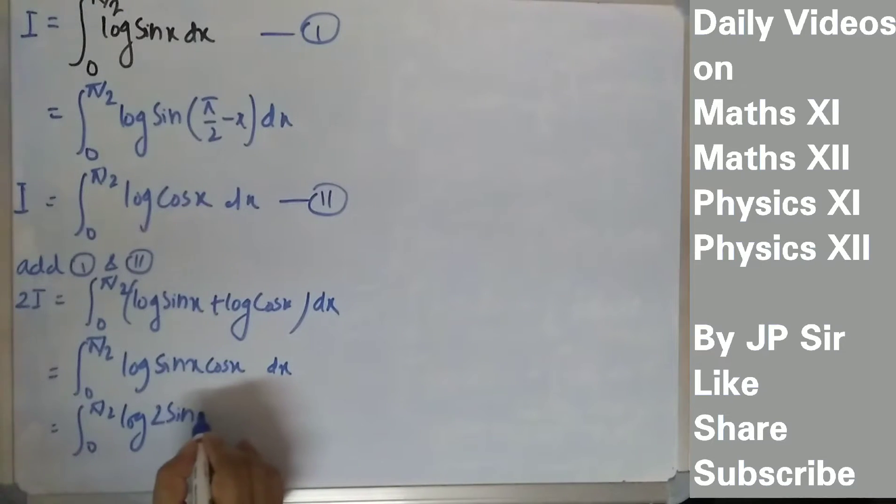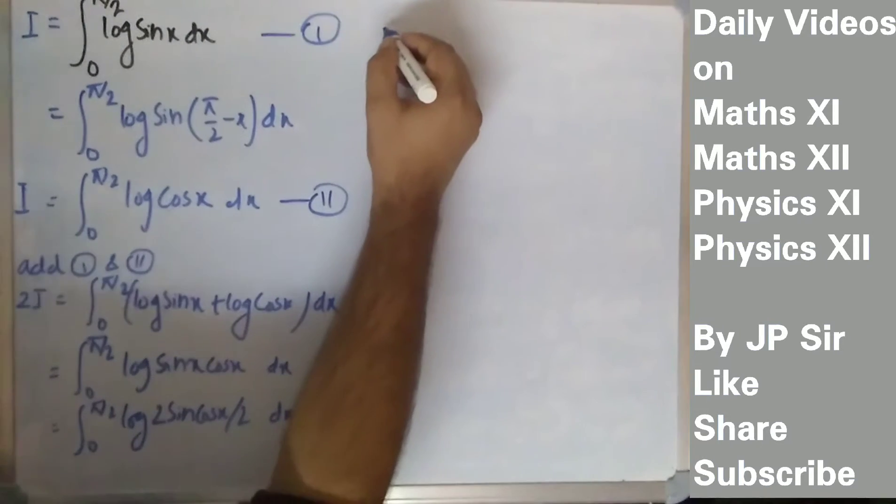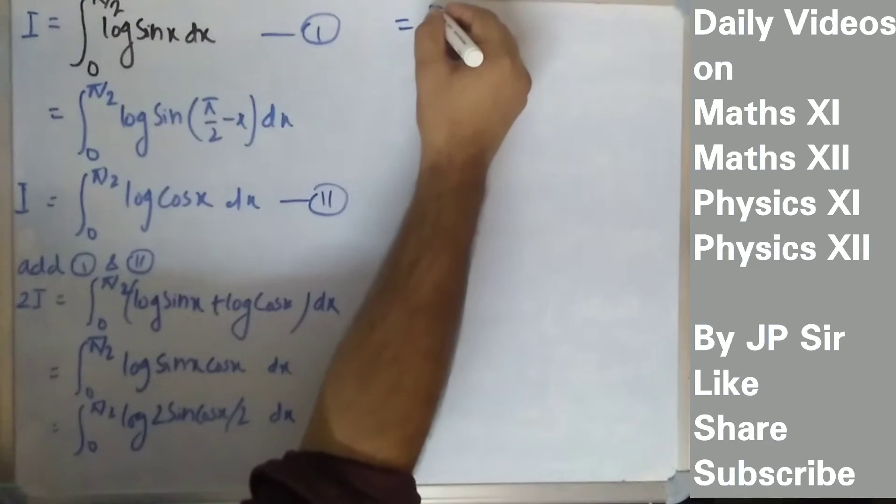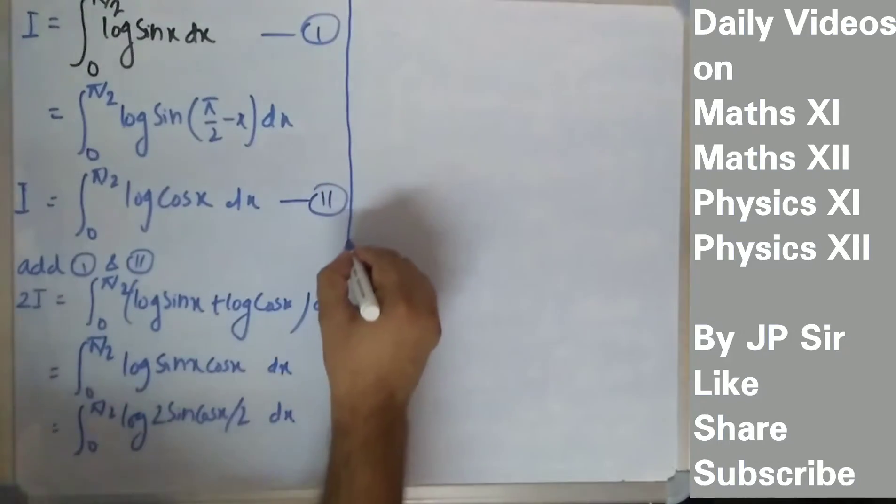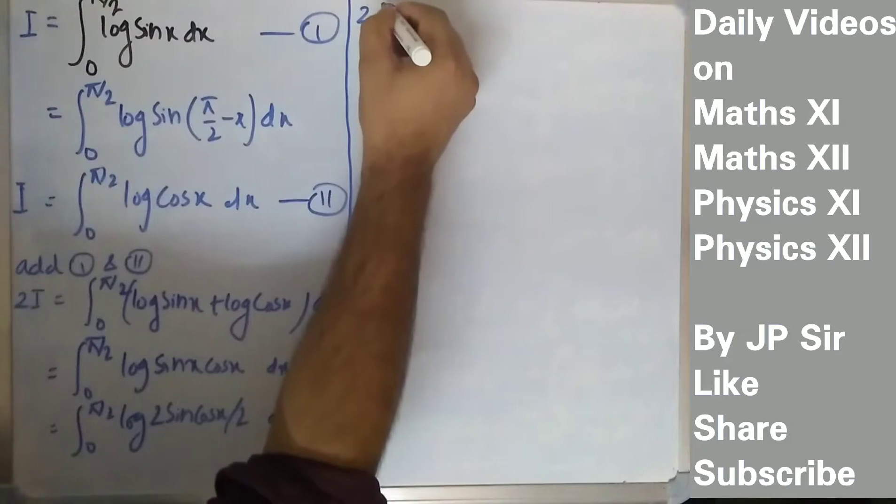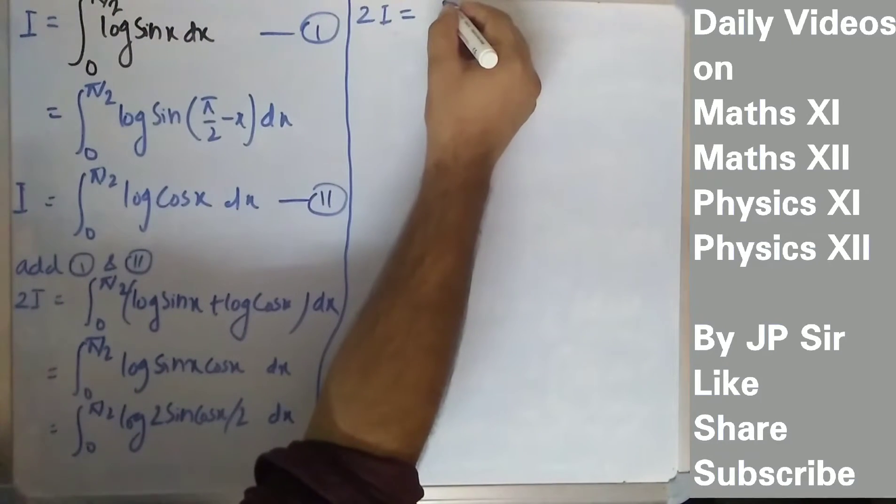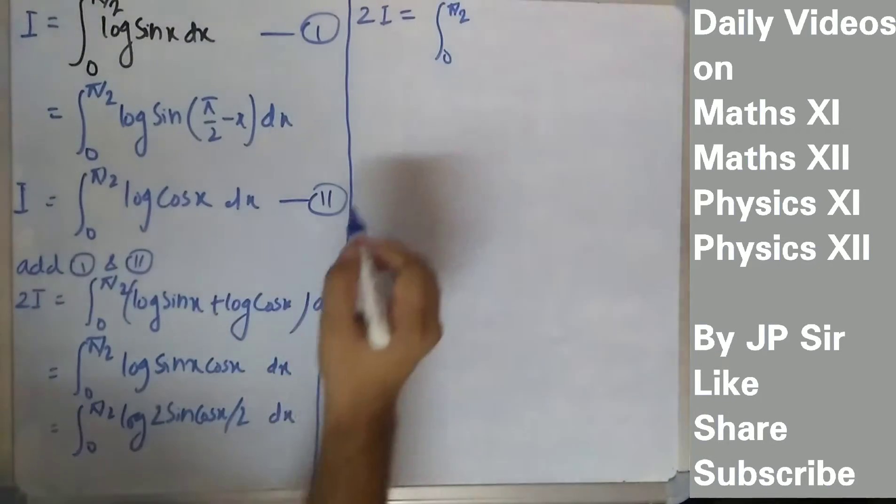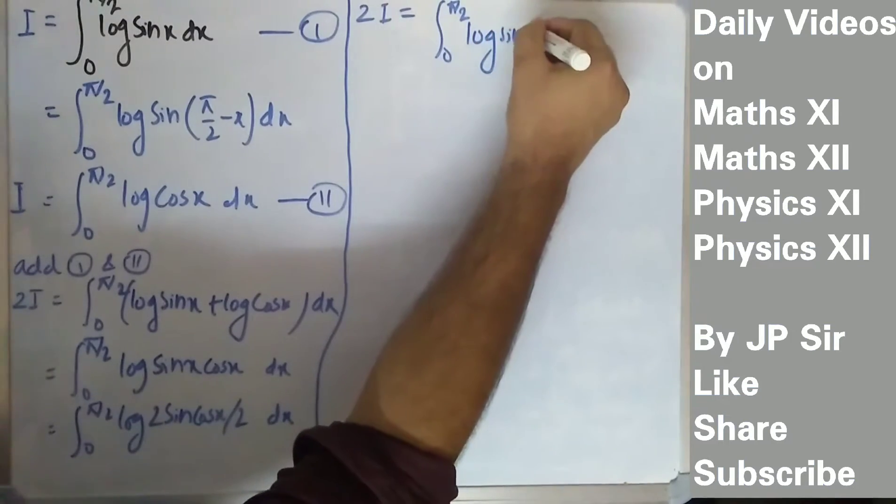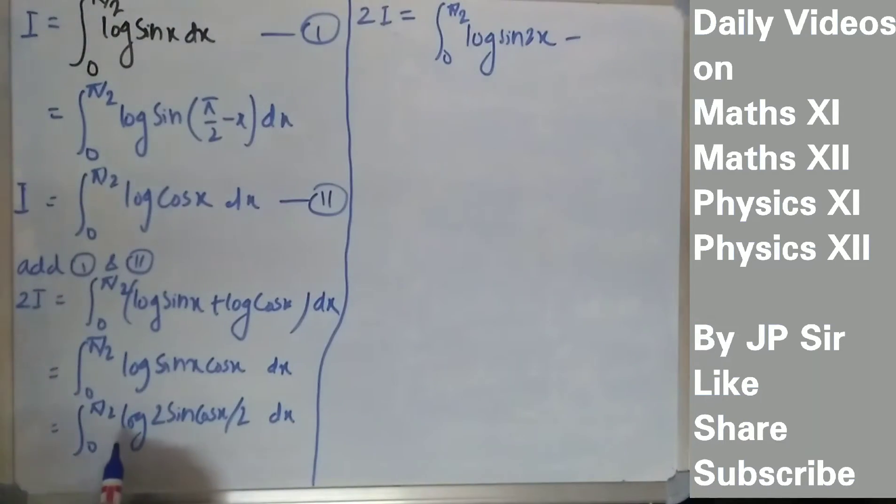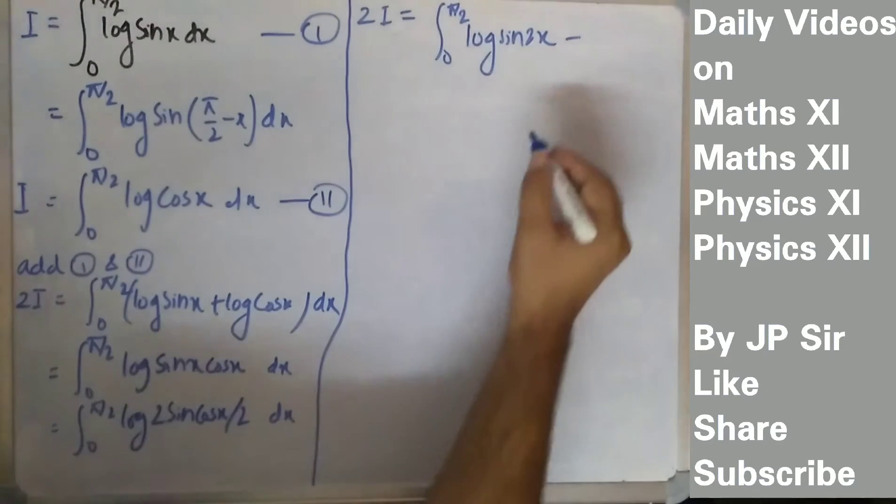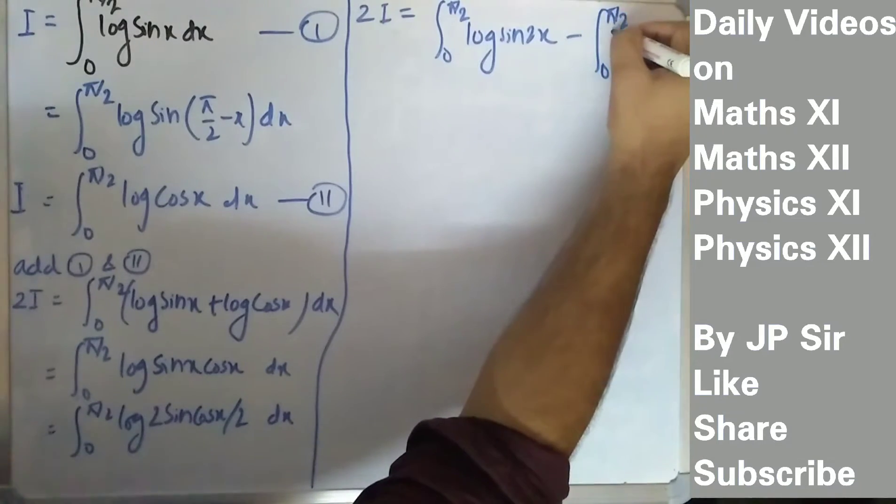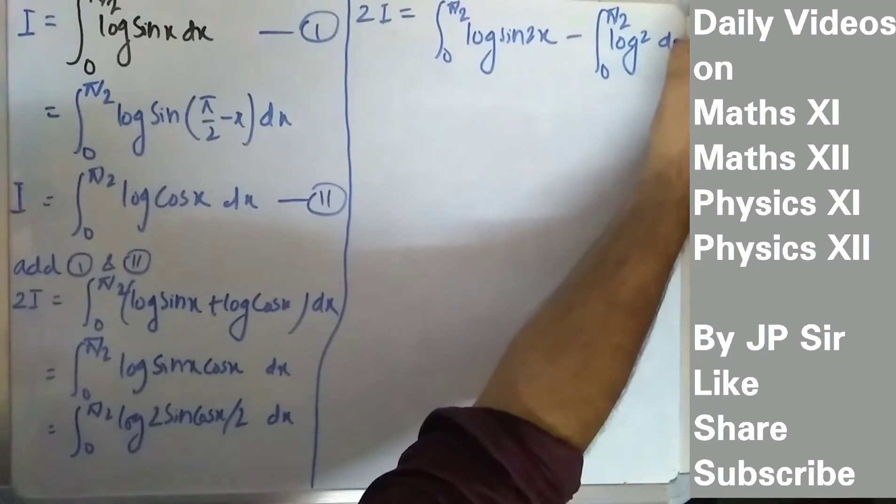Now multiply by 2 and divide by 2 here. 2I equals integral from 0 to pi by 2 of log 2 sin x cos x, which is log sin 2x, and this log 2 is in denominator, so it will be minus log 2 dx.